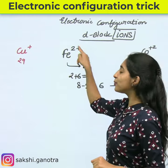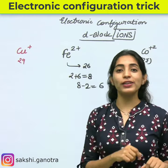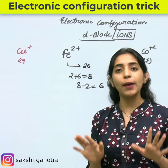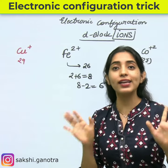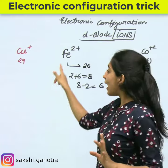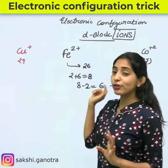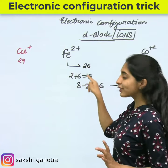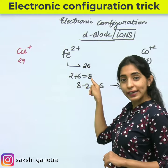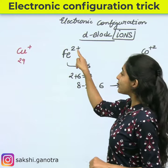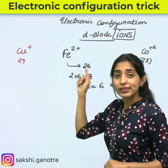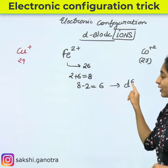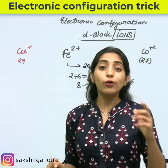Suppose someone asks you about Fe²⁺ electronic configuration. You just need to know the atomic number of iron, which is 26. So you add the digits: 2 plus 6 equals 8, then subtract the charge of 2 from 8, giving 6. So Fe²⁺ electronic configuration is D6.